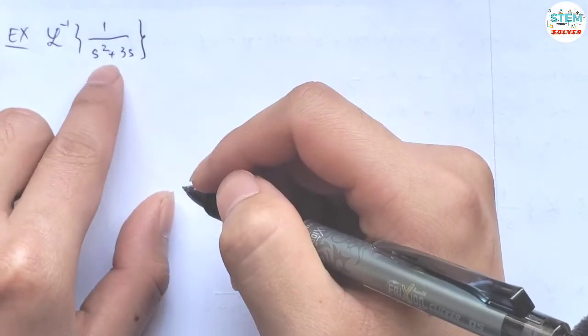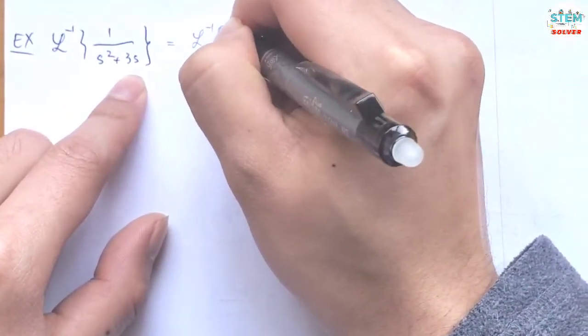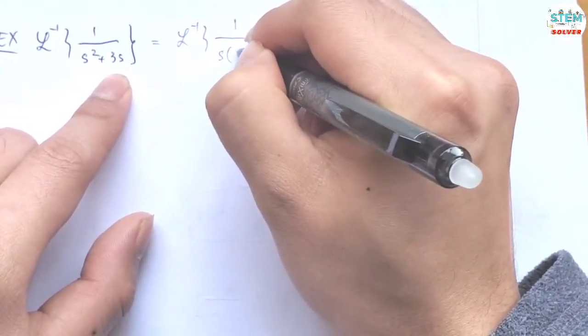Take a look at this. So we have s² plus 3s, so they have the s in common. First of all, I'm going to factor out the s. So I have s times s plus 3.